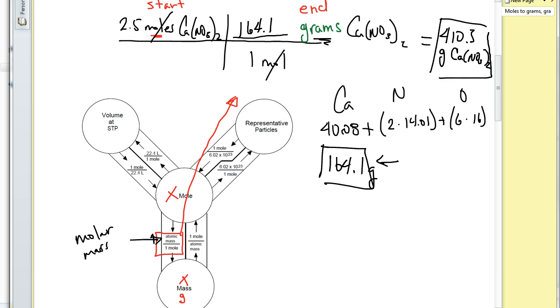So if you have 2.5 moles, you would have to measure out 410.3 grams of calcium nitrate. And that's how you do that problem using the mole road.